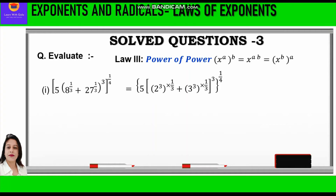Now 3 and 3 will get cancelled. We apply the third law — power of power — so we multiply the inner and outer powers. We write 5 in bracket 2 plus 3, whole cube, further whole raised to power 1 by 4. Now 2 plus 3 is 5, so we write 5 cubed. That gives 5 into 5 cubed, whole raised to power 1 by 4. Now 5 raised to power 1 into 5 raised to power 3 — we add the powers — giving 5 raised to power 4 into 1 by 4, which equals 5, as 4 and 4 cancel.